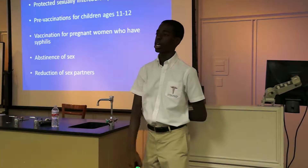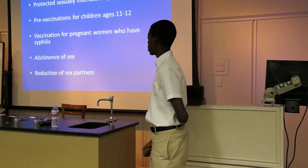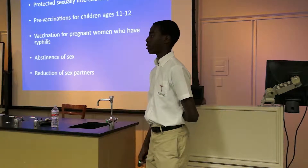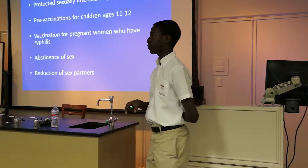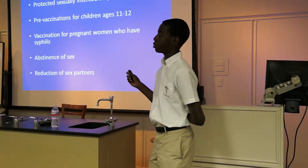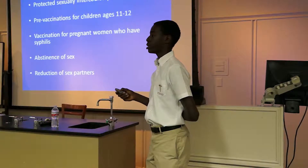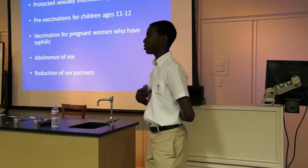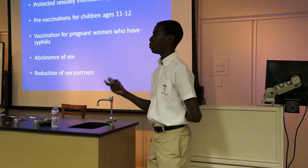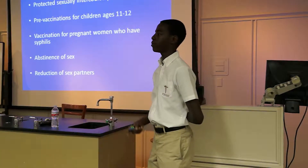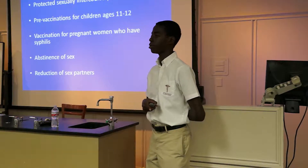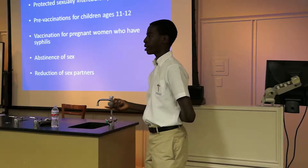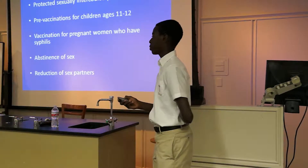Preventions: as with any STD, have protected sex by using condoms. You can also get pre-vaccinations, which are available in the United States for ages 11 and 12. You can also get those same vaccinations when you're older or pregnant. If you have syphilis and are pregnant, get vaccinated as soon as possible because you have a 75 to 80% chance of stopping your baby from getting syphilis. Also, abstinence and reduction of sex partners can prevent it.